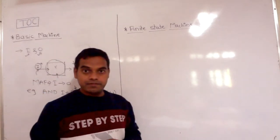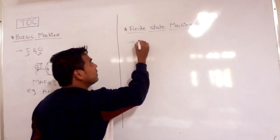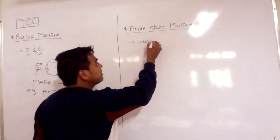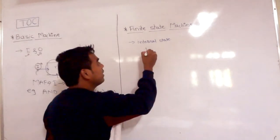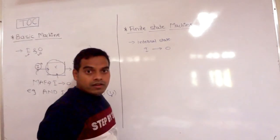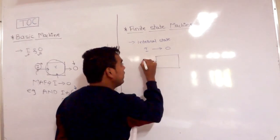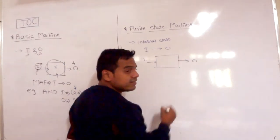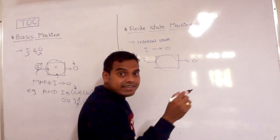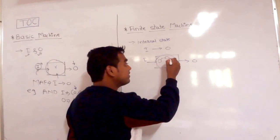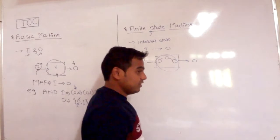Second is finite state machine. Finite state machine considers the internal state between input and output. Suppose any machine is there — if you provide input and it produces output, what happens inside, how the states change from one state to another state — that internal state is also considered by the finite state machine.